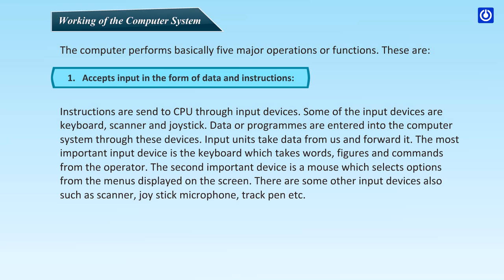The most important input device is the keyboard, which takes words, figures, and commands from the operator. The second important device is a mouse, which selects options from the menus displayed on the screen. There are some other input devices also, such as scanner, joystick, microphone, trackpad, etc.